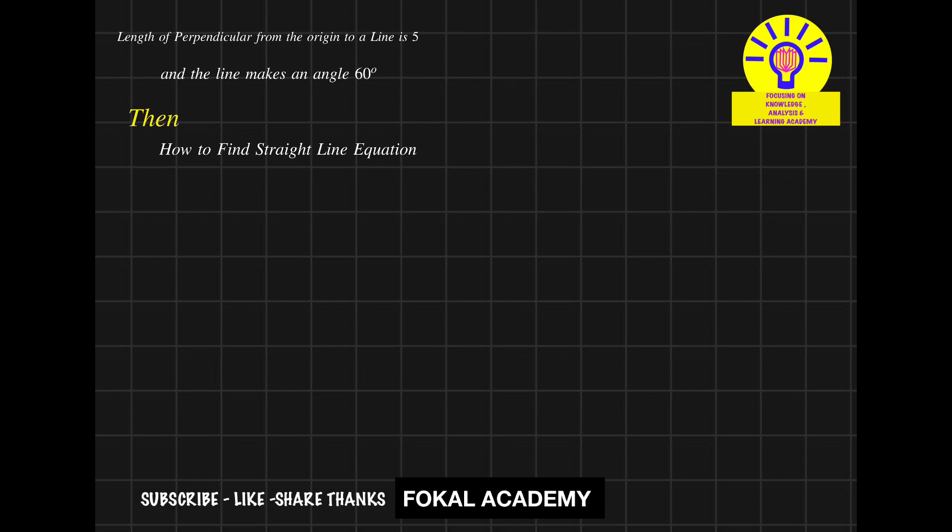Seeing this problem. This is a problem from straight lines. Here given as length of perpendicular from the origin to a line is 5 and the line makes an angle 60 degrees. Then how can you find the straight line equation?